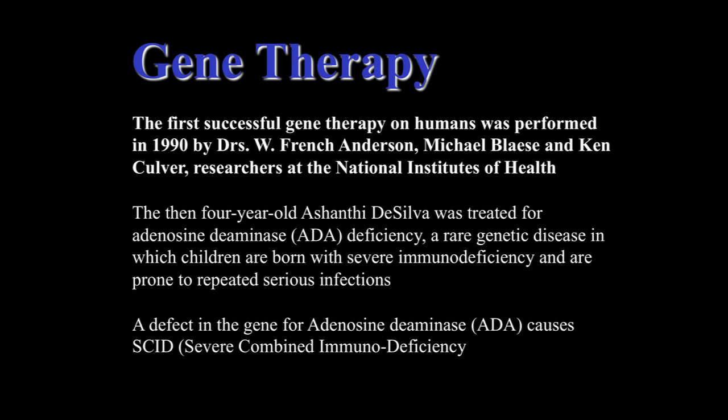The then four-year-old patient was treated for ADA — adenosine deaminase deficiency — a rare genetic disease in which children are born with severe immunodeficiency and are prone to repeated serious infections. A defect in ADA causes severe combined immunodeficiency disorder and has been a target in gene therapy owing to its simplicity, but also the severity of the disease. Its simplicity is really why it drew attention as a model, not the number of people affected.